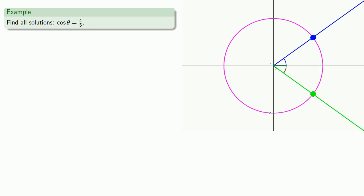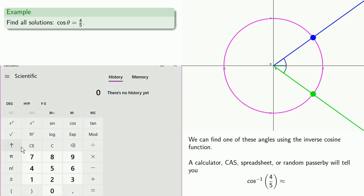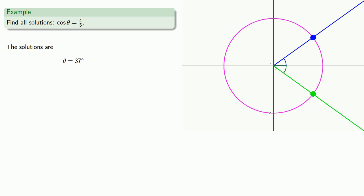Now we can find one of these angles using the inverse cosine function. A calculator, computer algebra system, spreadsheet, or random passerby will tell you that the inverse cosine of 4 fifths is about 37 degrees. And so this gives us one solution. But remember, the inverse cosine function will give us an angle in the first or second quadrant. And so 37 degrees will be the angle in the first or second quadrant whose cosine is 4 fifths.